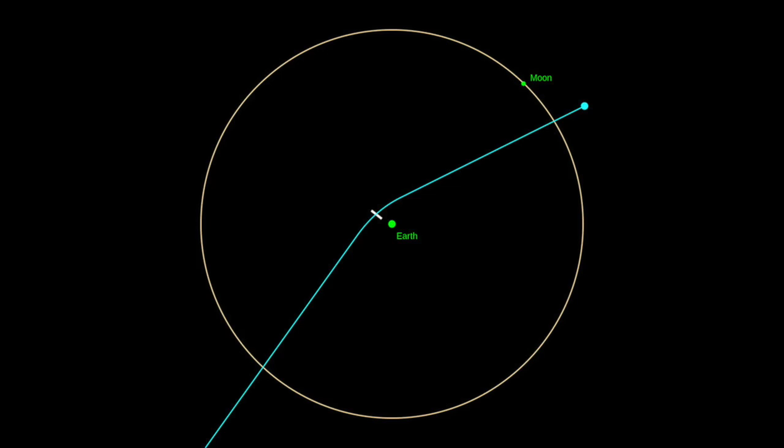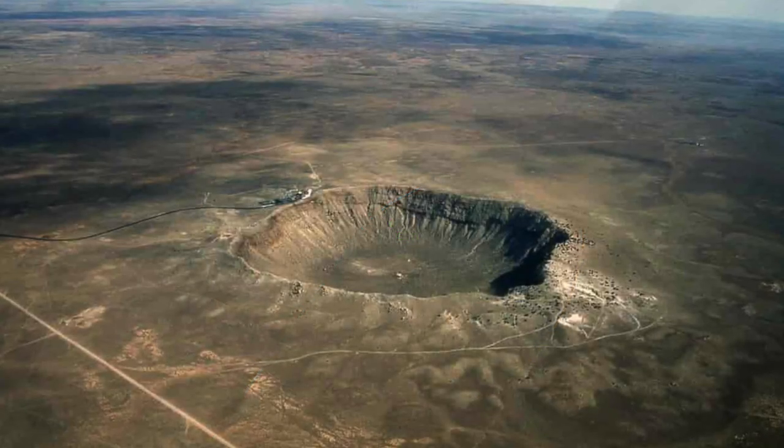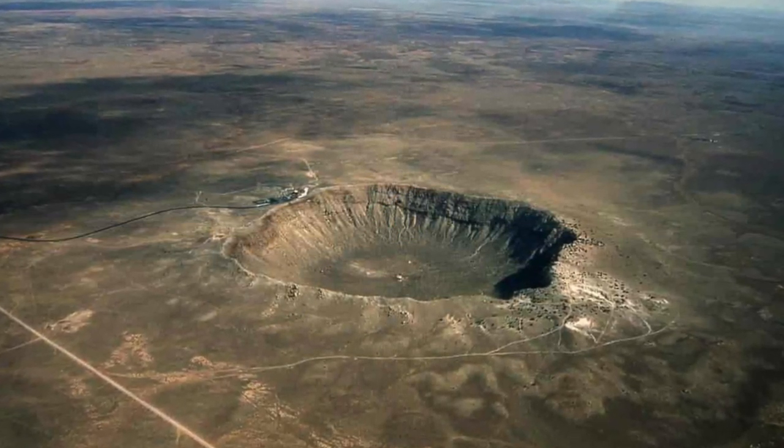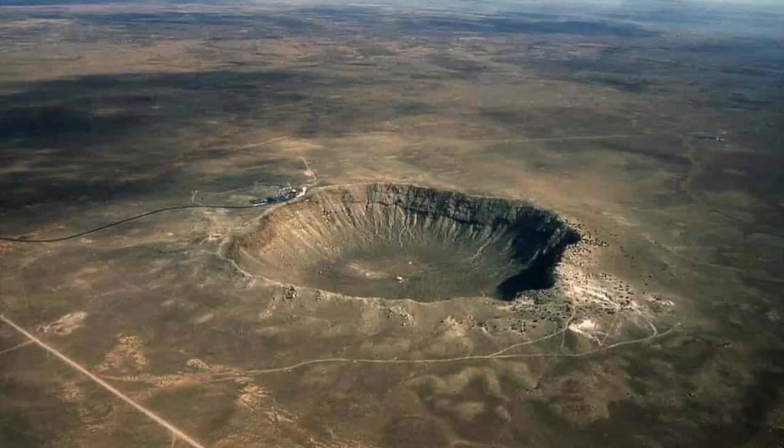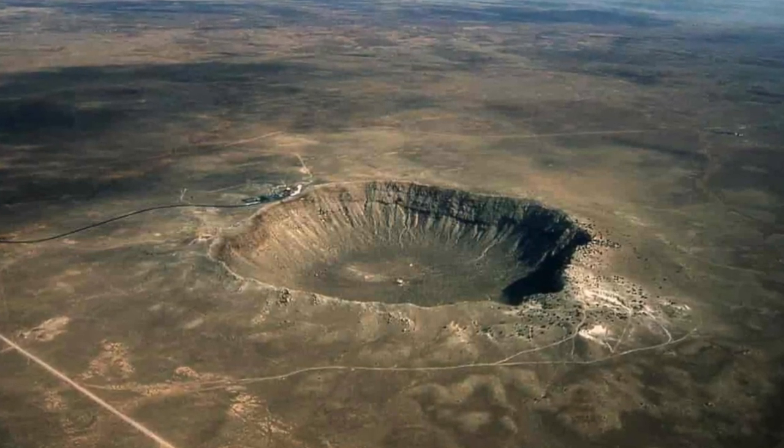But what about other asteroids? Earth bears the scars of many cosmic impacts. The Barringer crater near Flagstaff, Arizona, is a spectacular formation over a kilometre wide and 175 metres deep, excavated when an iron meteorite, maybe 50 metres across, slammed into the ground about 50,000 years ago.